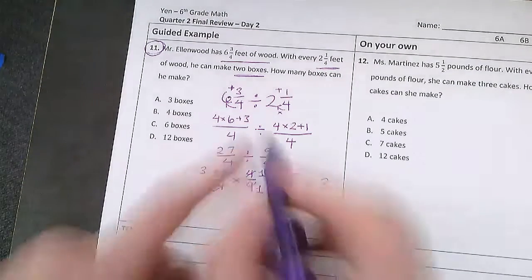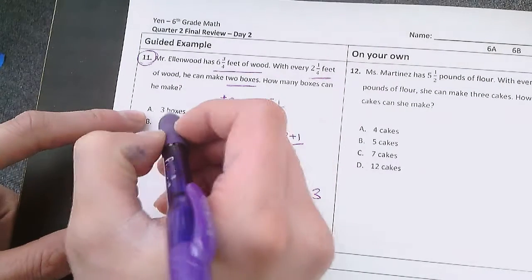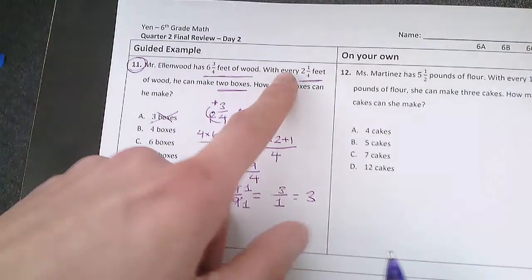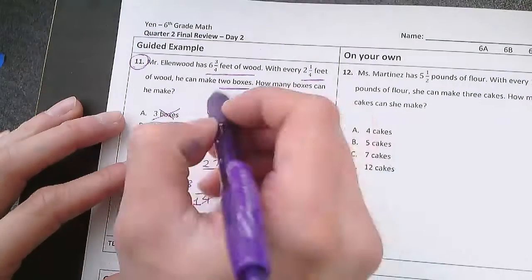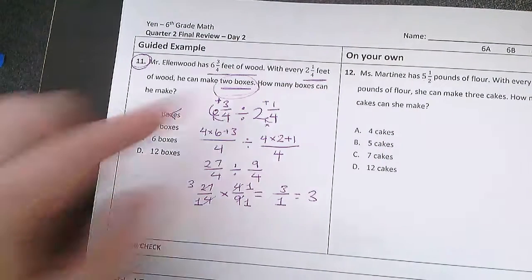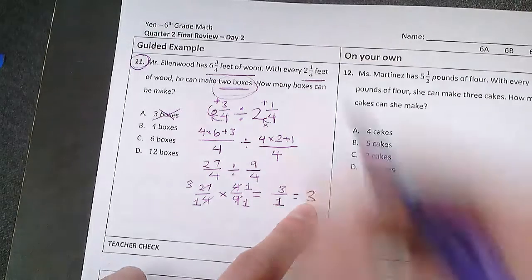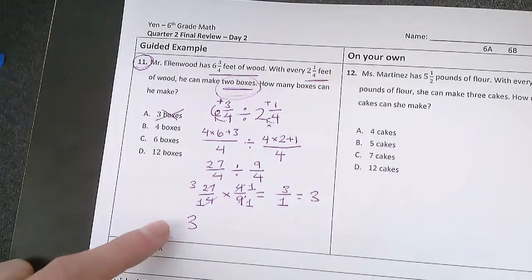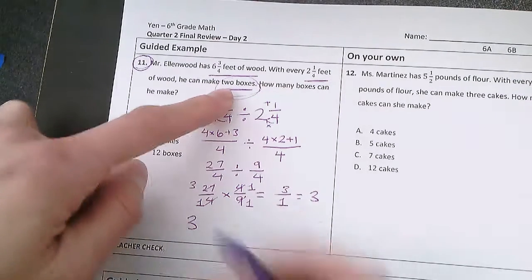Now I might think okay I divided I got 3, my answer is 3 boxes right? But actually it's not going to be 3 boxes because be careful it says with every 2 and 1/4 feet of wood he can make 2 boxes. And we want to figure out how many boxes he can make. So we know we have 3 sections of 2 and 1/4. That's how many sections we have. But each section that's 2 and 1/4 can make 2 boxes.